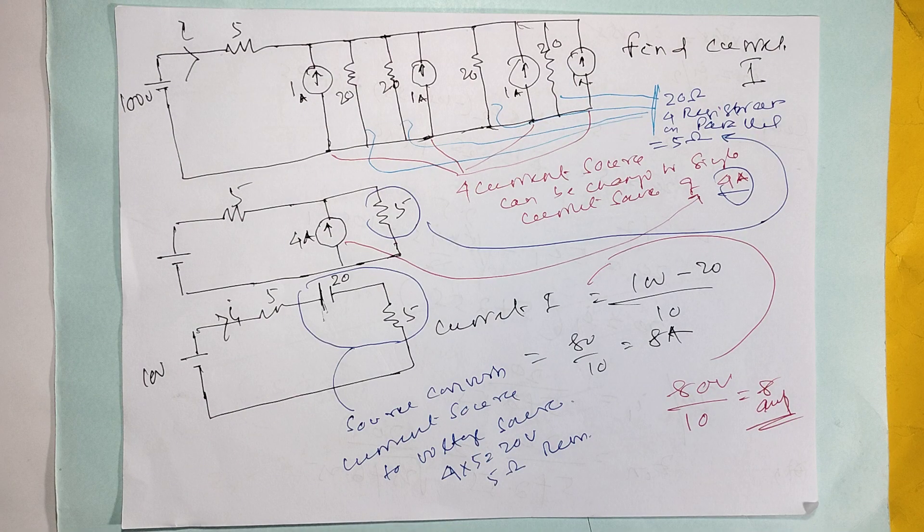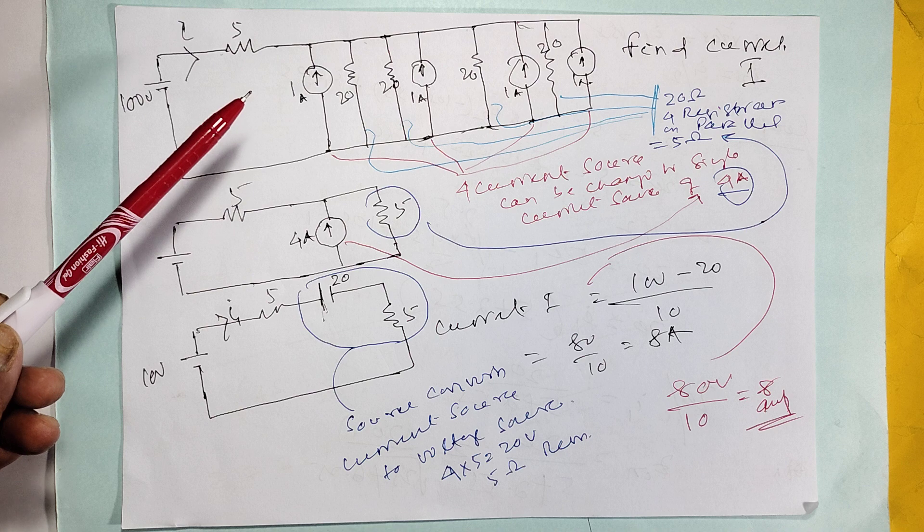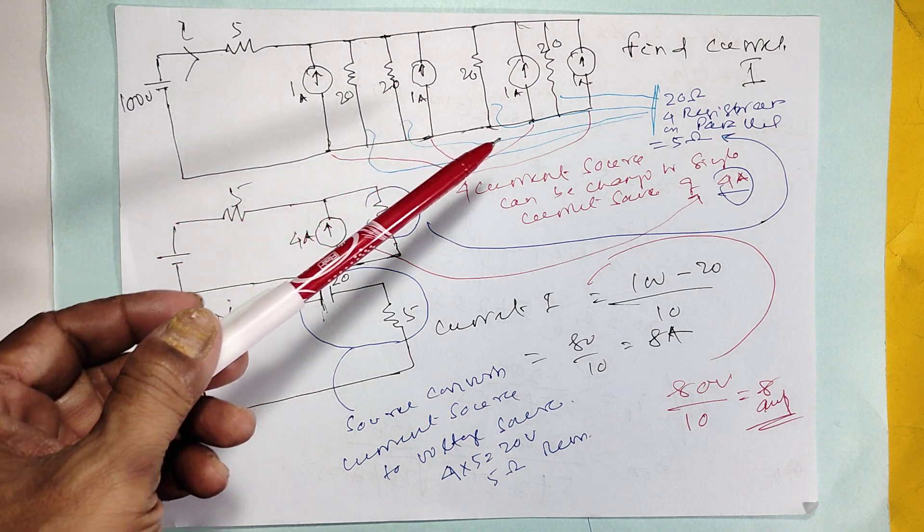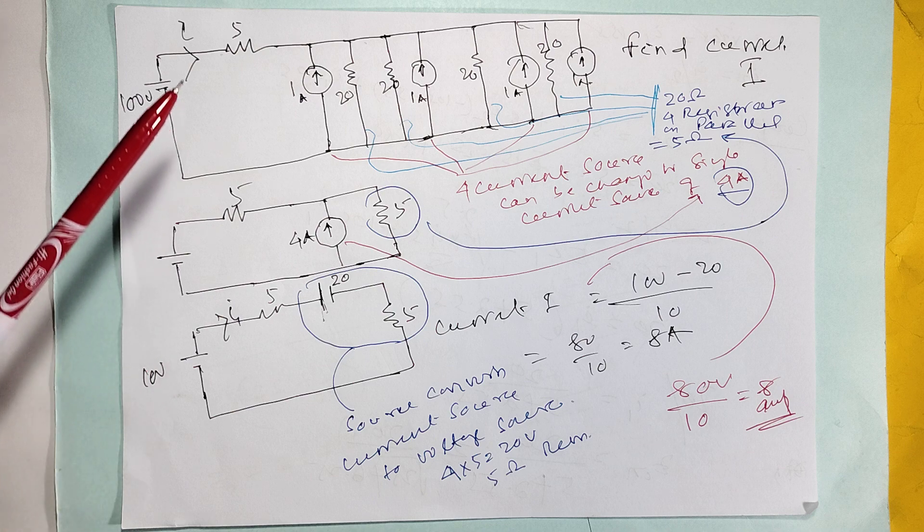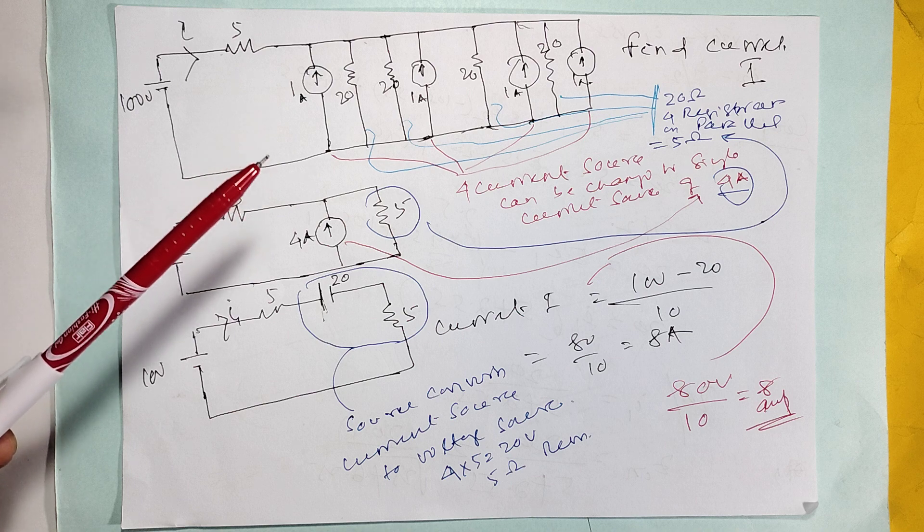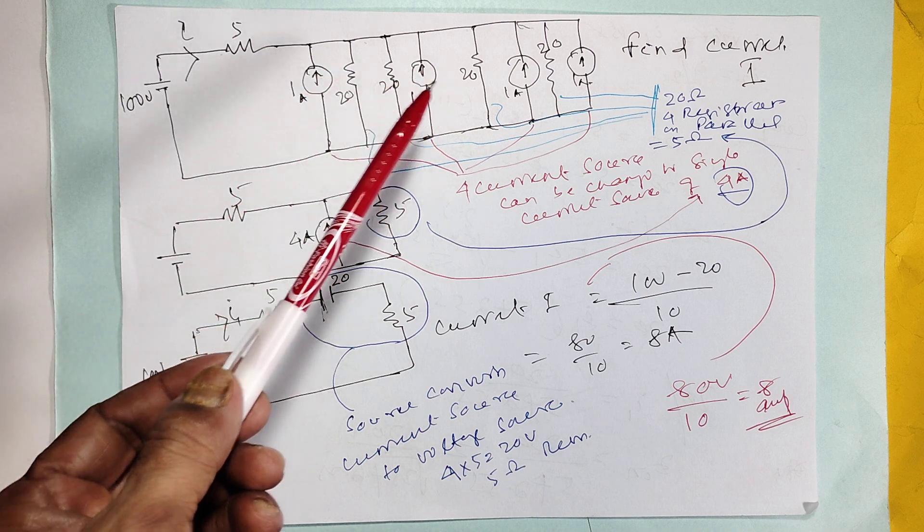This is a network given with 4 current sources and 4 20-ohm parallel resistors. Mind it, when this type of network is given, these 4 current sources can be converted to 1 source, 1 ampere into 4 ampere.